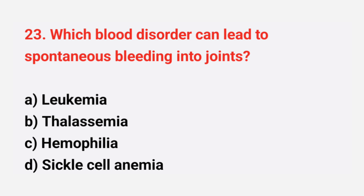Question number 23: which blood disorder can lead to spontaneous bleeding into joints? The right answer is option C.